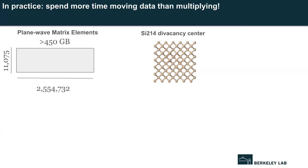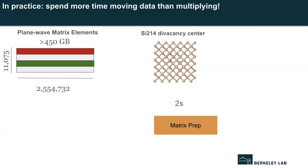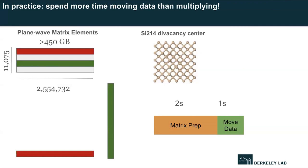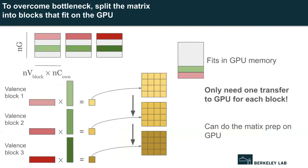Here's how this calculation plays out: on four nodes on Perlmutter, each with four GPUs, we pull the row and column submatrices and start matrix prep, which takes about two seconds. We then transfer them to the GPU, taking another second, and the actual matrix multiplication only takes half a second once they're there — and this is just for making a single block of the RPA polarizability. We're spending far more time moving data than multiplying, and more time preparing data than multiplying. This is not good; we need to tweak things.